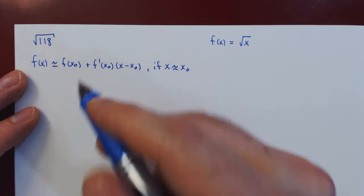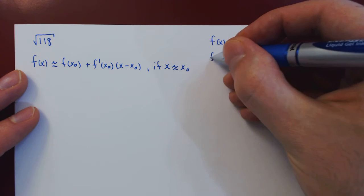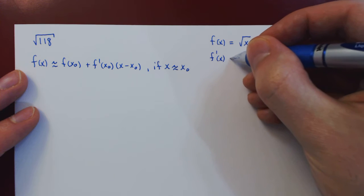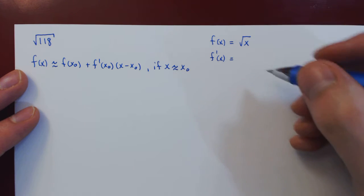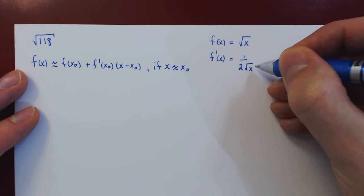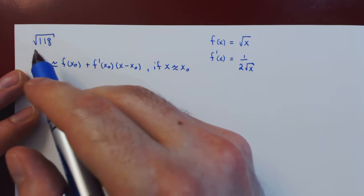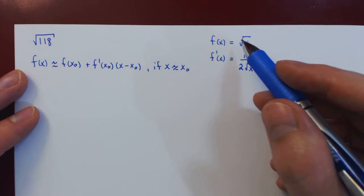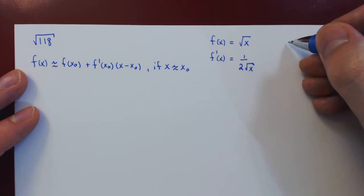We also need to find the derivative of f. If we use the power rule, the derivative of root of x is 1 over 2 root of x. And since we want to estimate the square root of 118, then we need x to be 118.